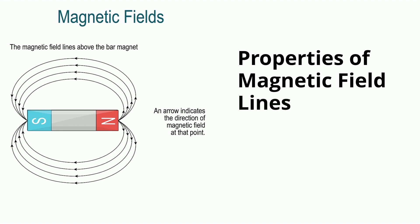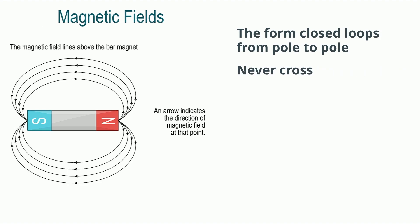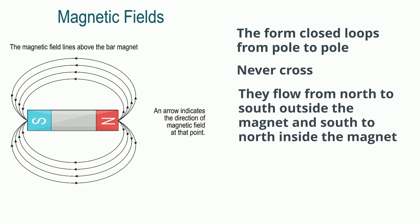The properties of magnetic field lines: they form closed loops from pole to pole, they never cross, they flow from north to south outside the magnet and south to north inside the magnet, and the closer the lines, the greater the strength.